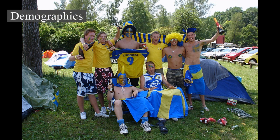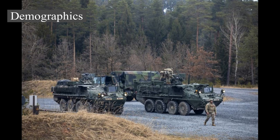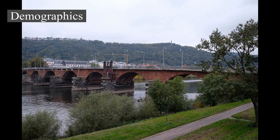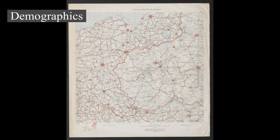Religion: According to the 2011 census, Christianity was the largest religion in Germany, with 66.8% of respondents identifying as Christian, of which 3.8% were not church members. 31.7% declared themselves as Protestants, including members of the Evangelical Church in Germany, which encompasses Lutheran, Reformed, and confessional unions. 31.2% declared themselves as Roman Catholics and Orthodox believers constituted 1.3%. According to data from 2016, the Catholic Church and the Evangelical Church claimed 28.5% and 27.5% of the population respectively.